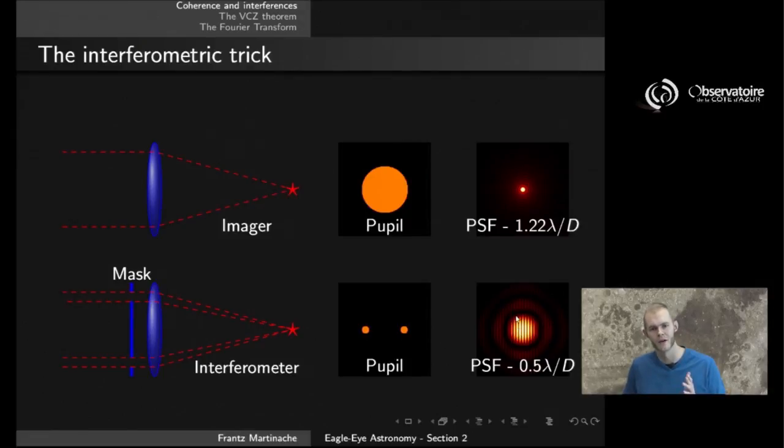But overimposed to that diffraction pattern, you see dark and bright stripes alternating. We will refer to them as the interference fringes. We'll be talking about fringes for the rest of the course.